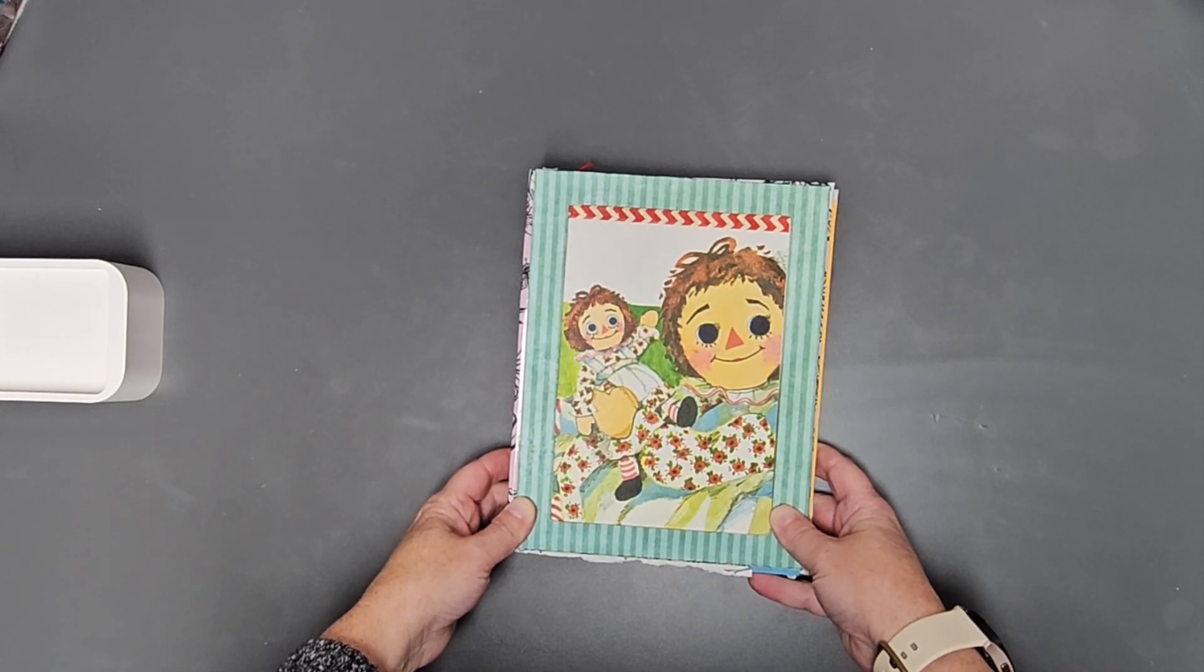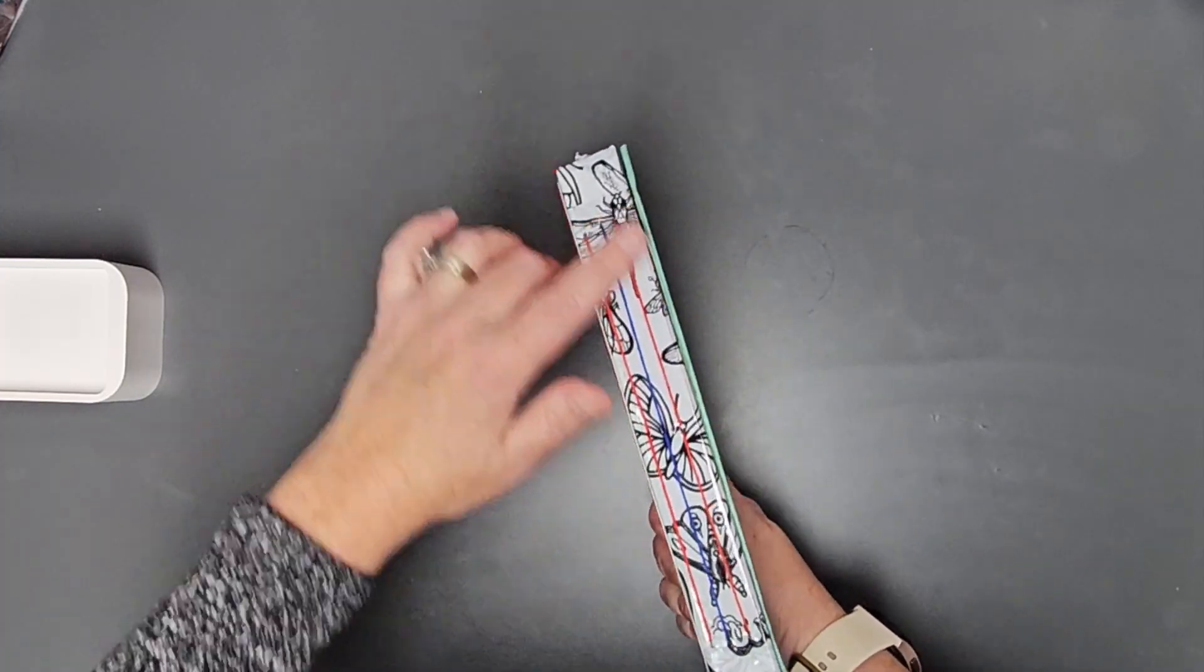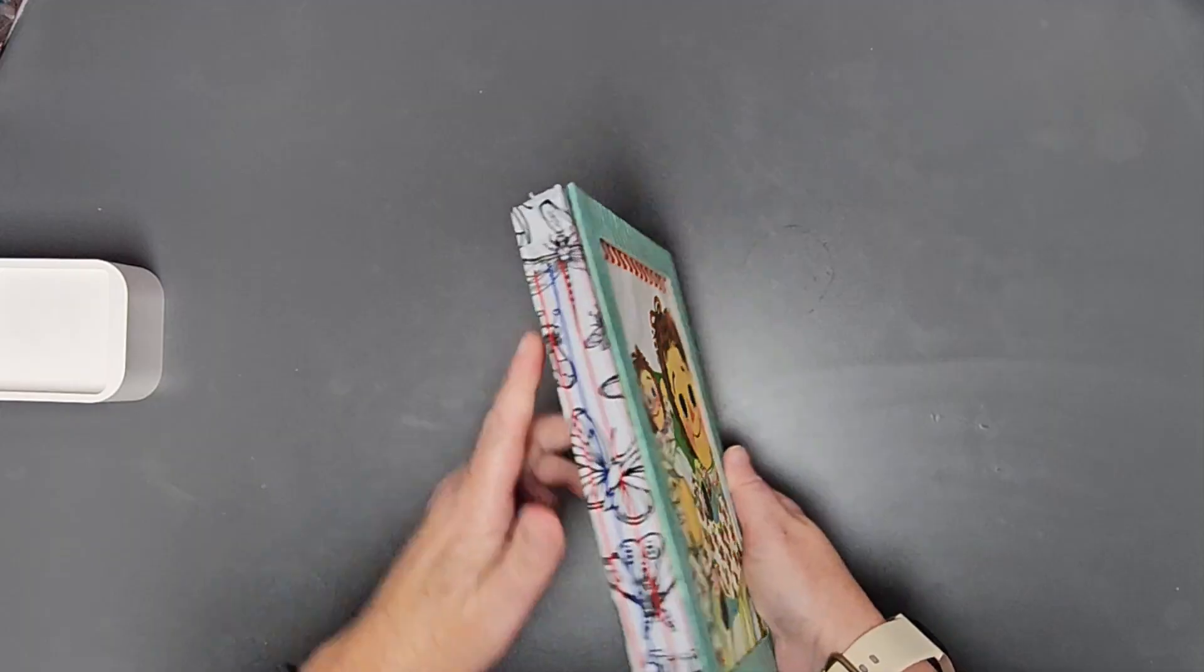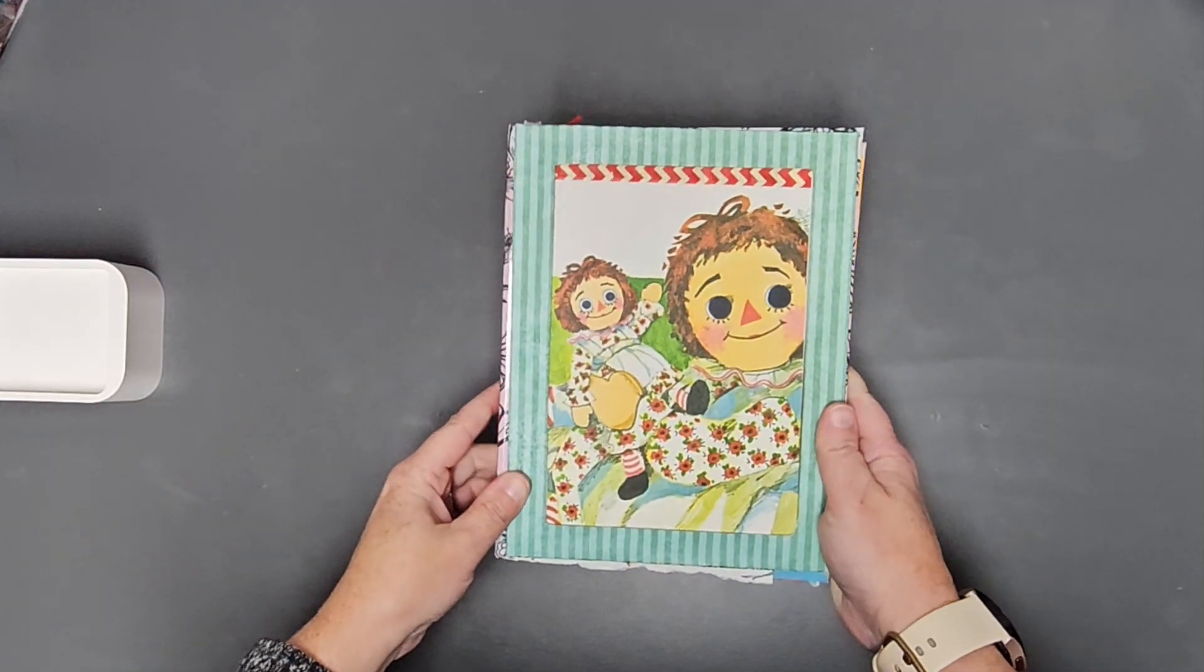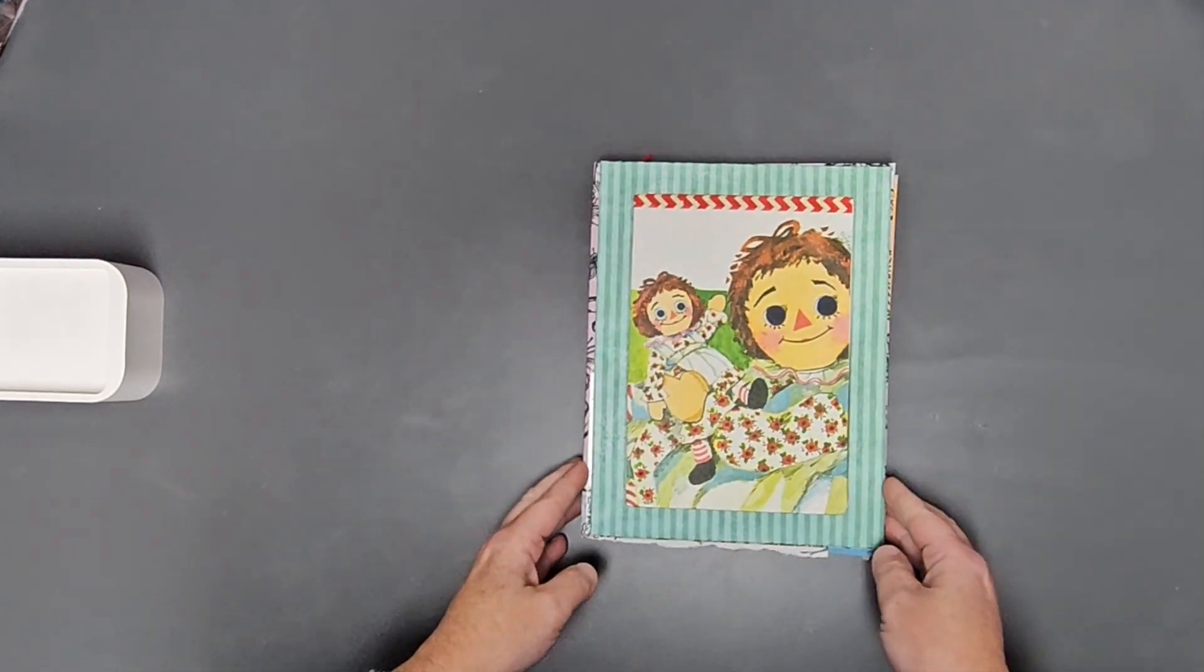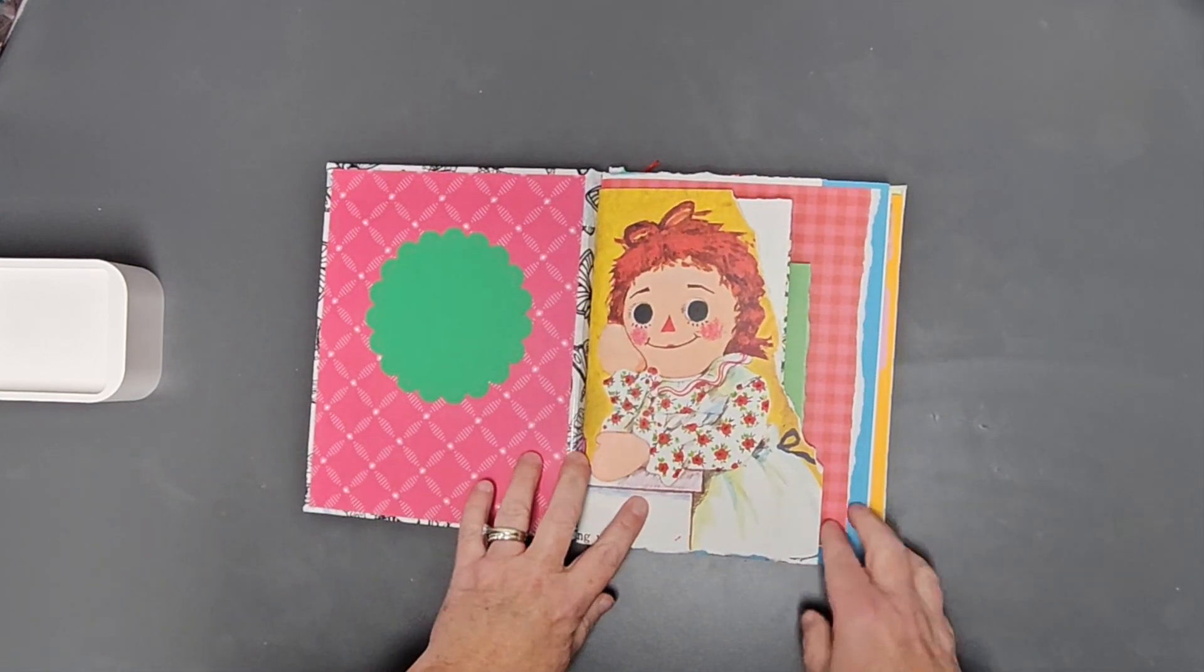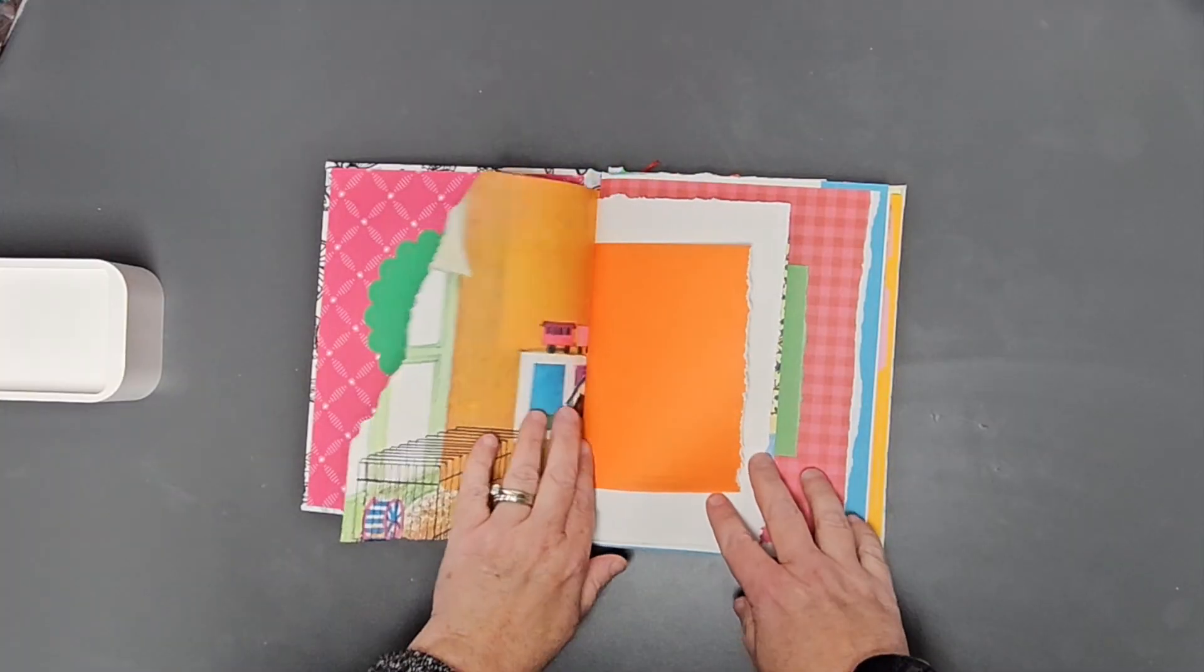I loved the patterns in it. So here is my hardcover Raggedy Ann book. It's got three signatures, it's eight by six in size, and here we go, let's take a little look. The patterns in here were great, I loved it.